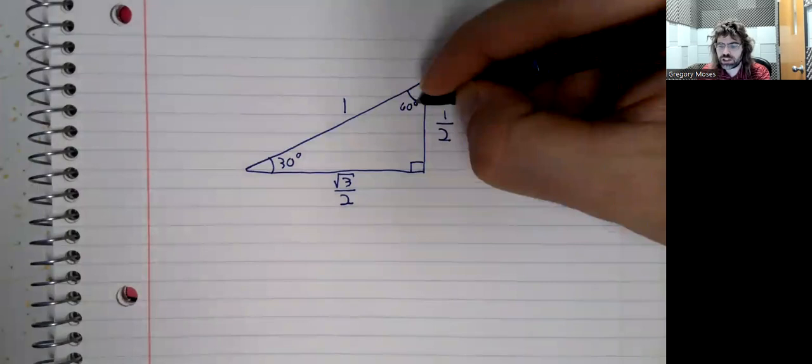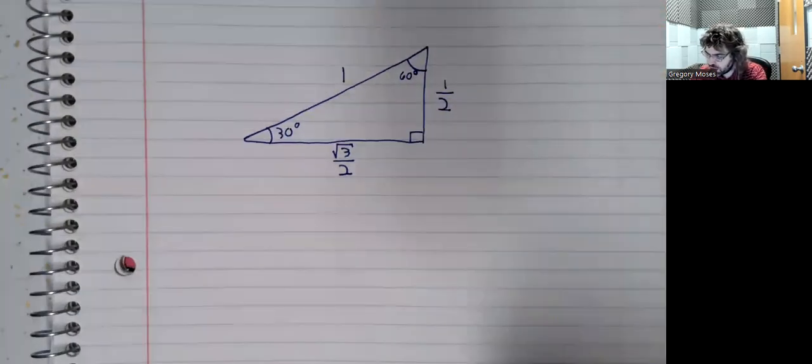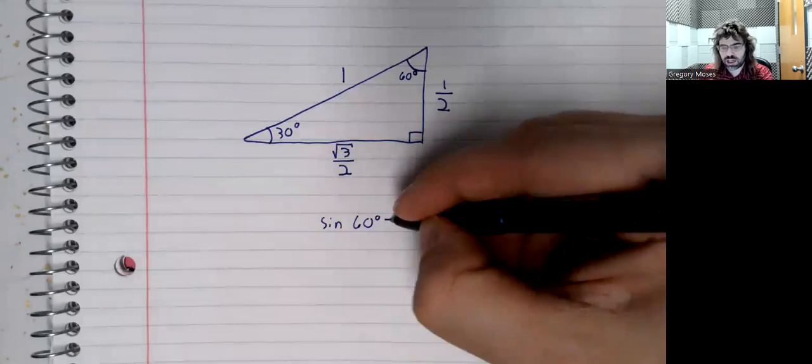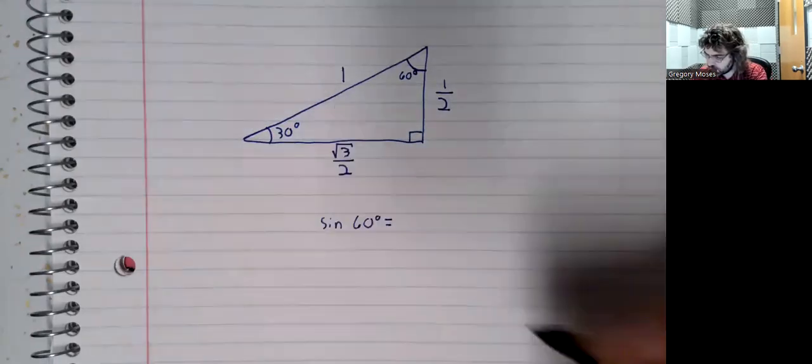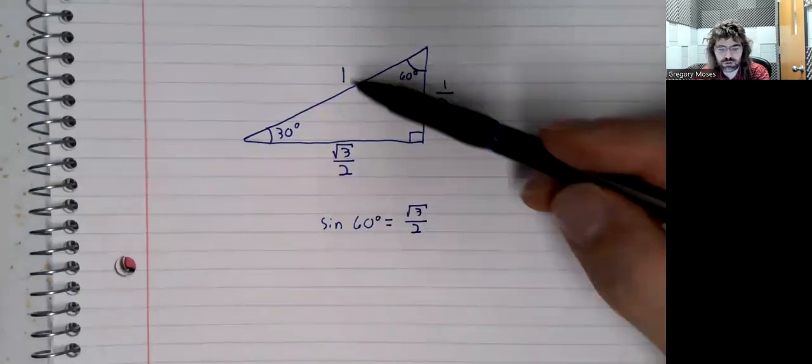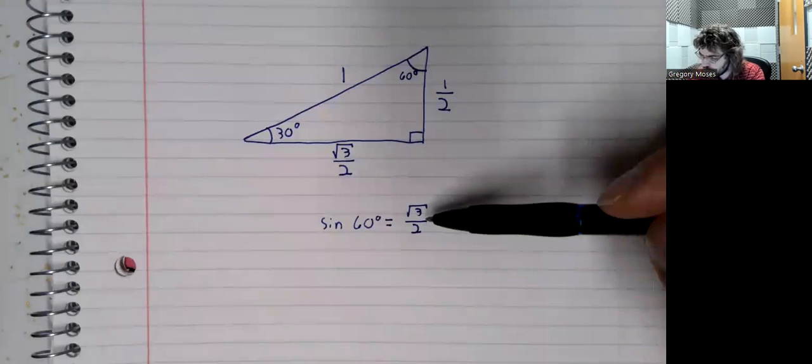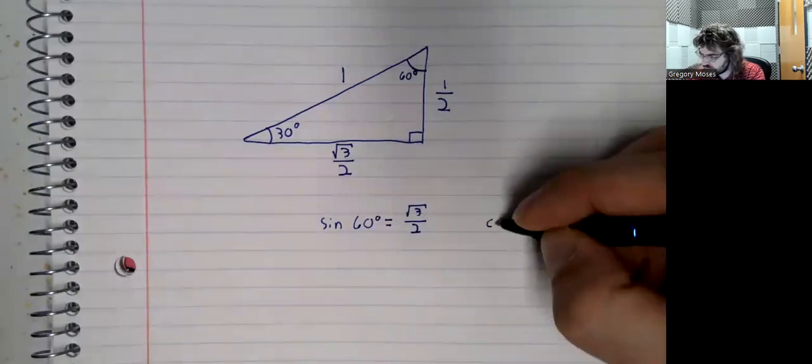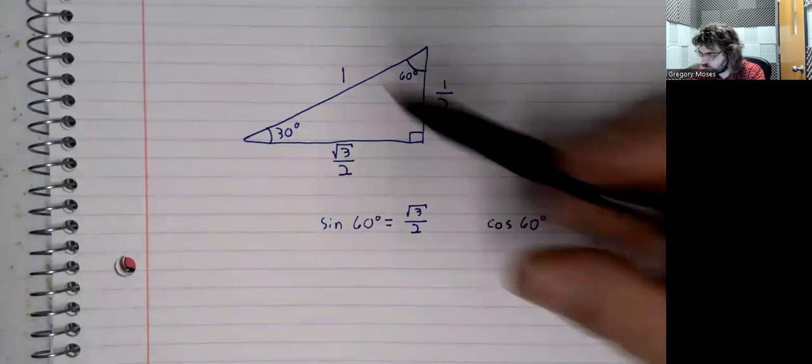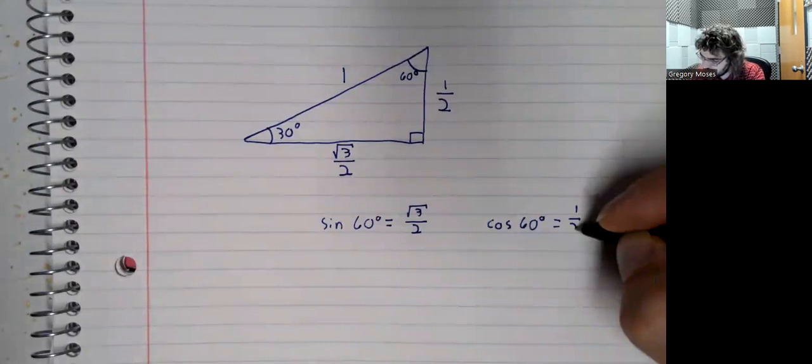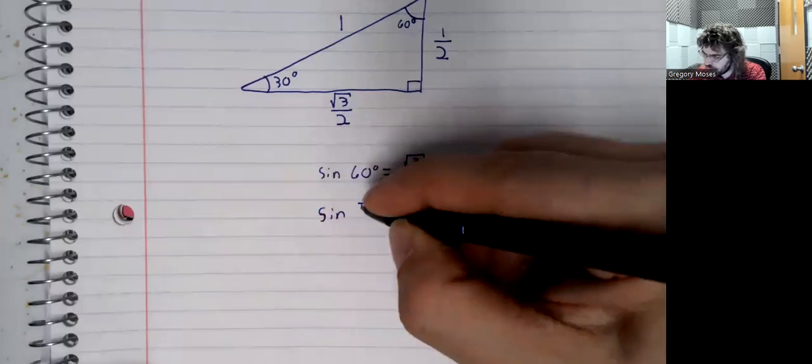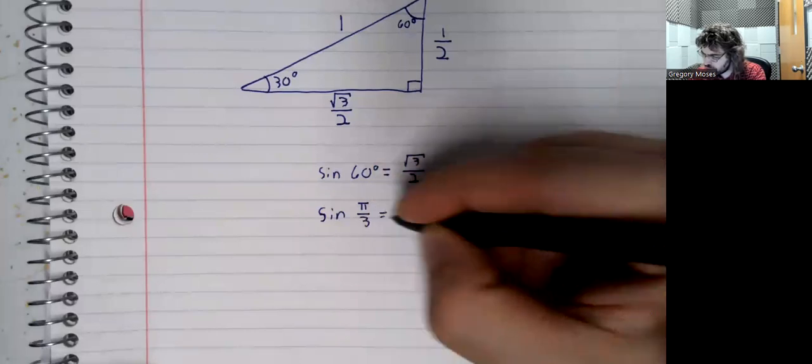And now let's hit this with right triangle trigonometry. The sine of 60 degrees is the opposite over the hypotenuse, so the square root of 3 over 2 divided by 1. And the cosine of 60 degrees is the adjacent over the hypotenuse. 60 degrees is pi over 3 radians.